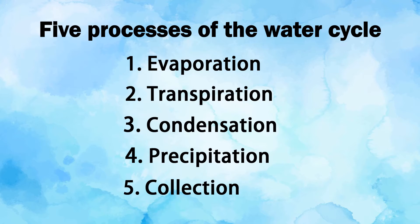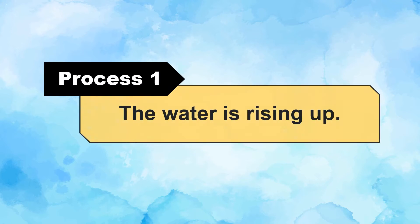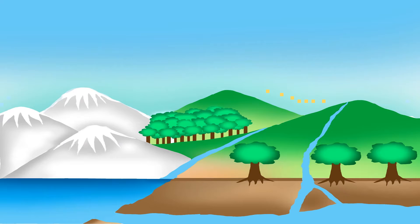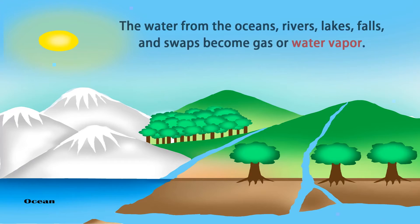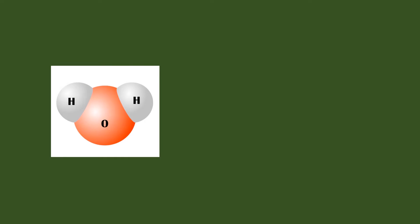Process 1: The water is rising up. During the day, the heat coming from the Sun warms the Earth's surface, which consists of bodies of water and land. Evaporation: the water from the oceans, rivers, lakes, falls, and swamps becomes gas or water vapor because heat causes the particles of water to move.